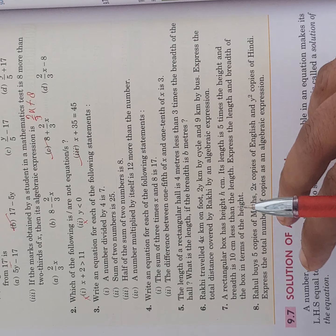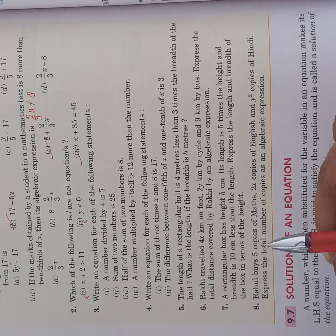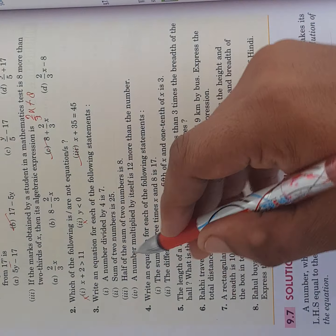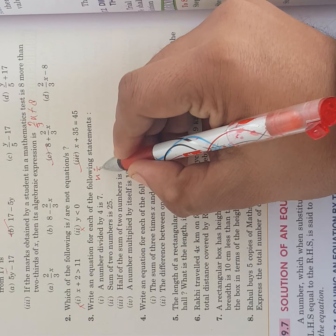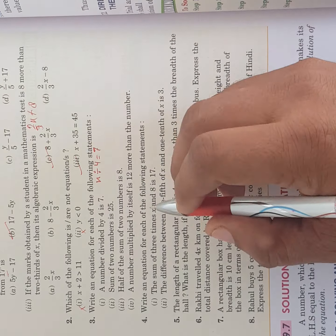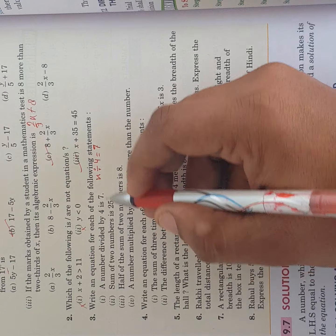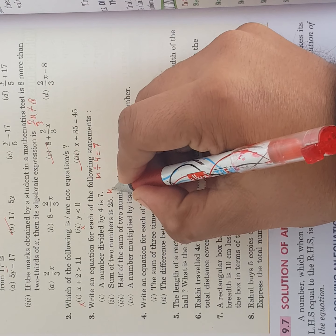Write an equation for each of the following statement. A number divided by 4 is 7. A number divided by 4, we take a number as x. We divide it by 4, then how much do we get, we get 7. This is the answer.